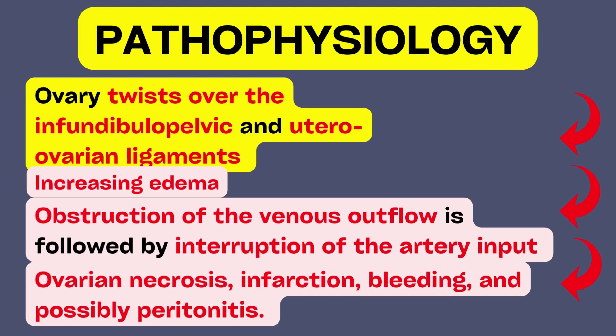Initial obstruction of the venous outflow is followed by interruption of the artery input as a result of increasing edema, which results in ovarian necrosis, infarction, bleeding, and possibly peritonitis. Right side torsion is more common than the left as a result of the sigmoid colon's placement on the left side of the pelvis.